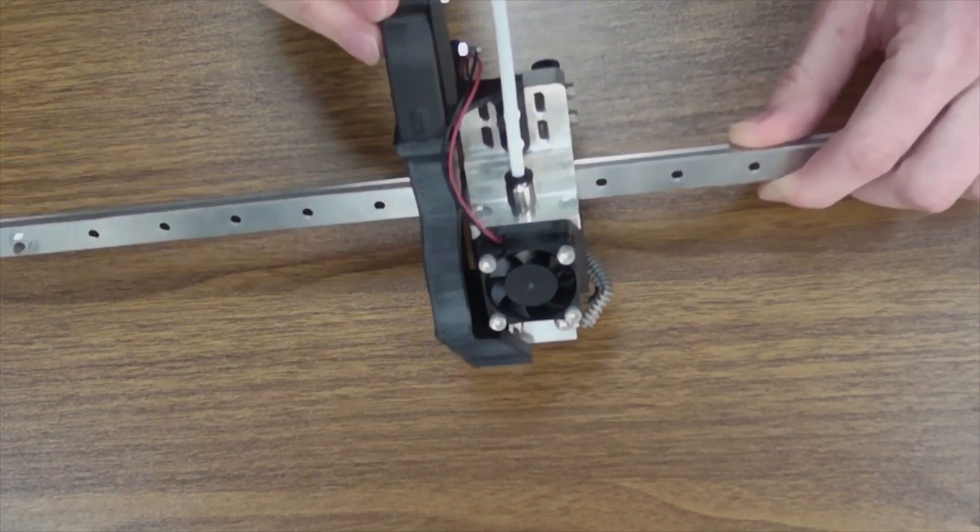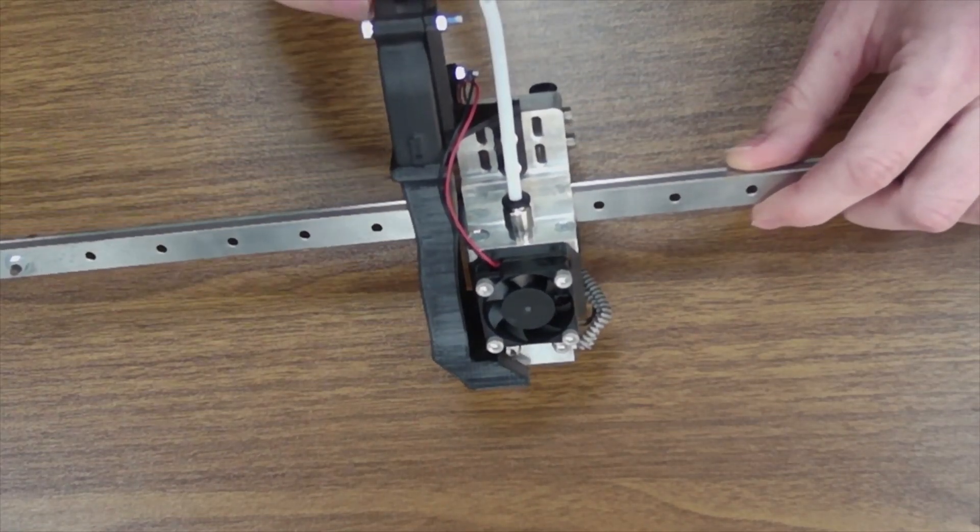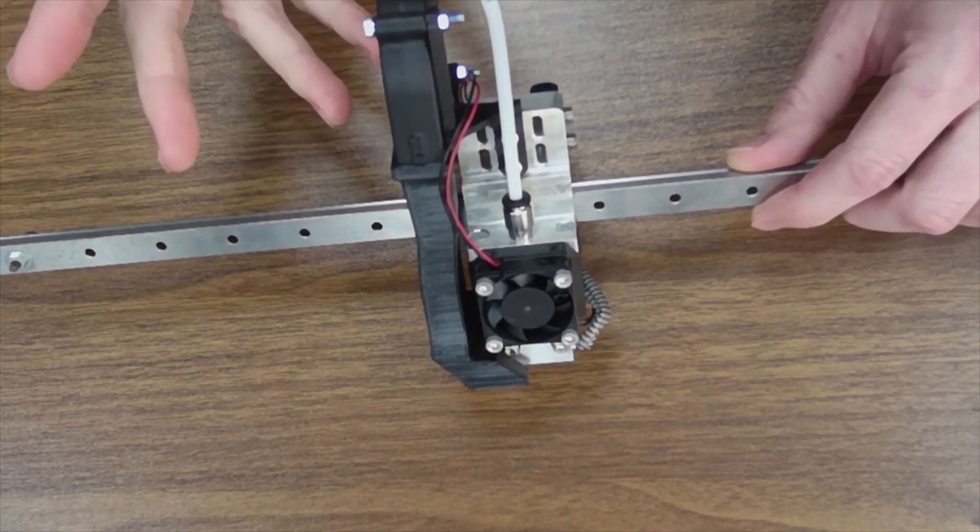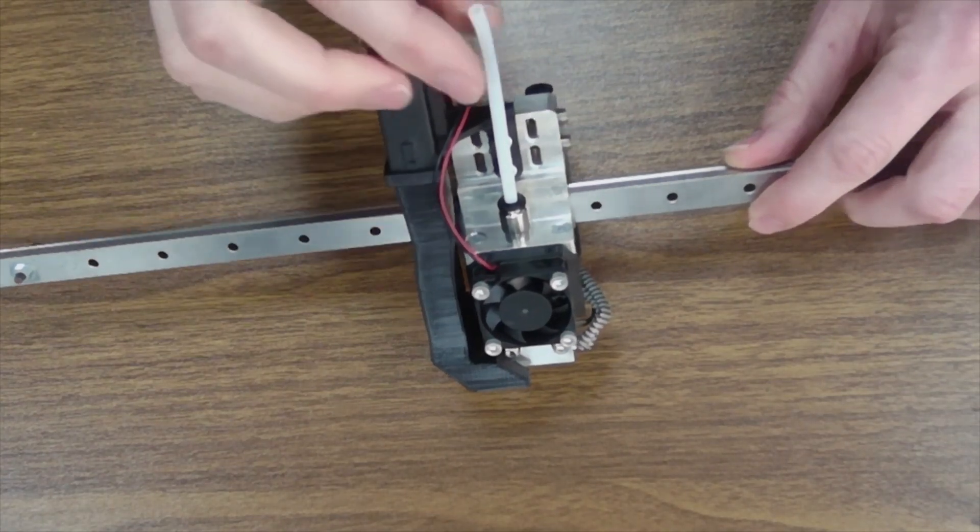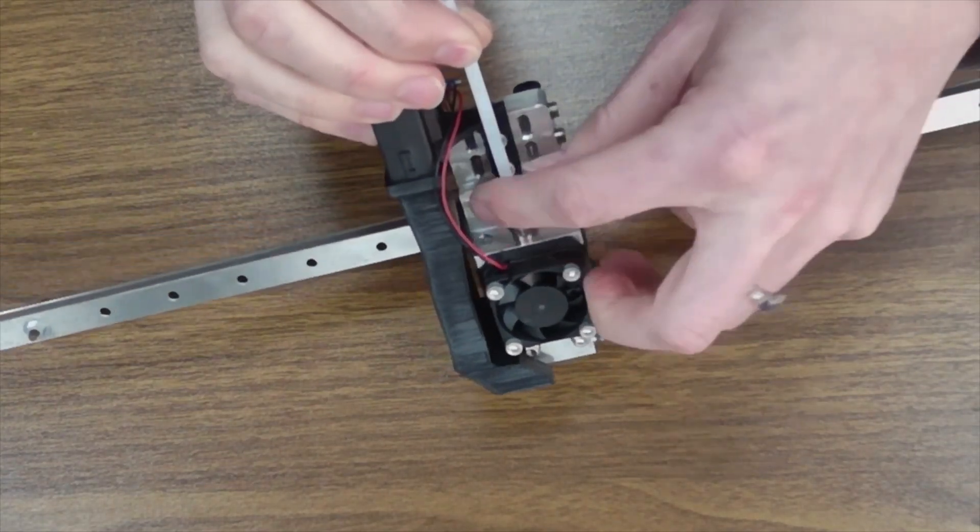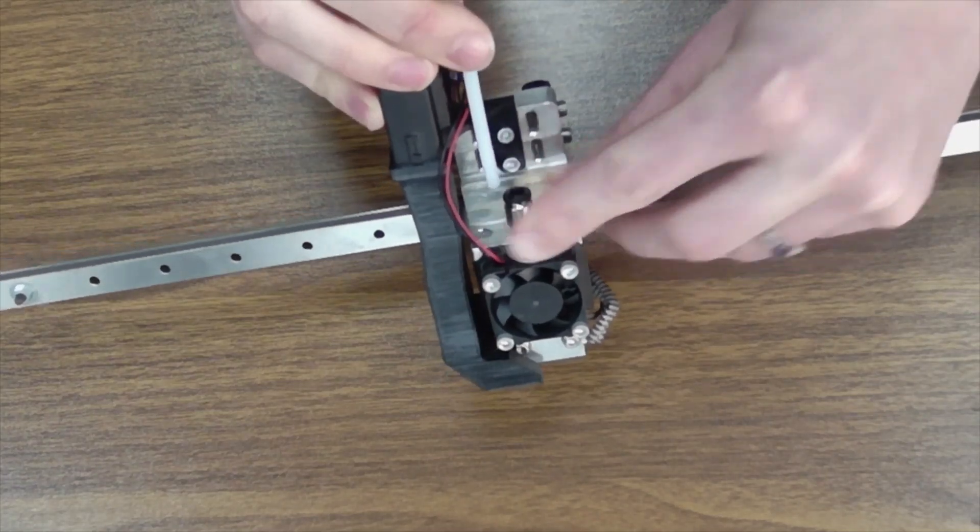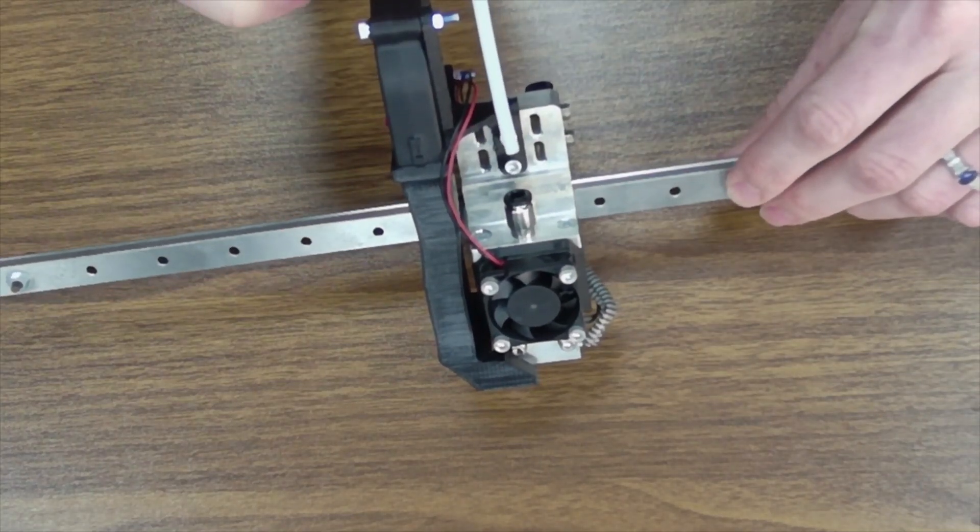So let's talk about how to change that printhead tube without taking the printhead off the printer. The first thing you're going to do is remove your Bowden tube. So you're going to push down on the release coupling here and you're going to slide the tube out of the fitting.